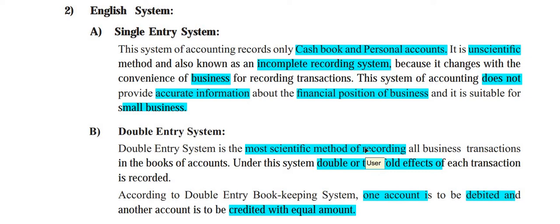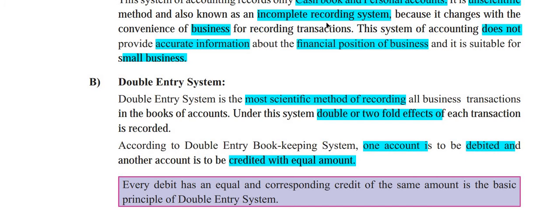The second and more important system we follow is the double entry system. I discussed its meaning in the last video. The double entry system is the most scientific method of recording all business transactions in the books of account. Data is accurate, and you can record all business transactions. The main important thing is that it takes into consideration the double or two-fold effects of each transaction.